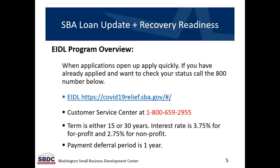There is an 800 number listed here and also a link for making application to the EIDL program. The EIDL loan amount is determined by economic injury and will be amortized over either 15 or 30 years. If you are a for-profit business the rate is going to be 3.75%. If you're a non-profit it's going to be 2.75%, and the payments are going to be deferred for one year.